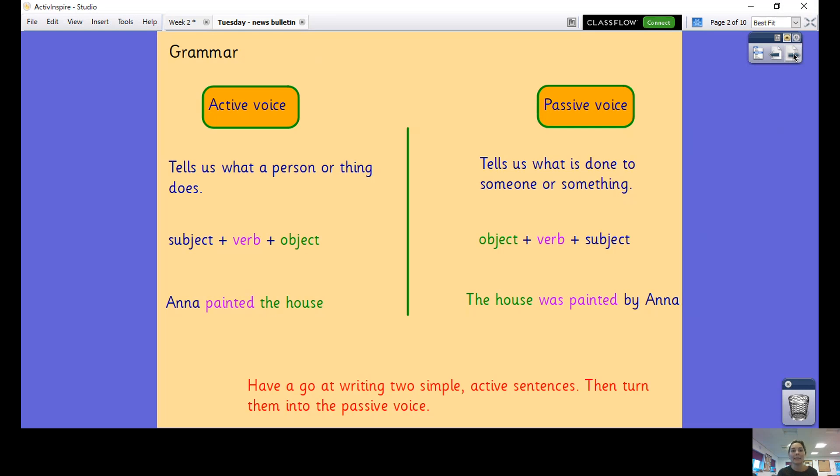If we're looking at the active voice, that is telling us what a person or thing does. It goes in this order: we've got our subject, the person that is doing the thing, we've got our verb, what they are doing, and our object, what they are doing it to. For example, Anna painted the house. You can see quite clearly there who is the subject of the sentence - Anna, the verb is painted, and the house is the object.